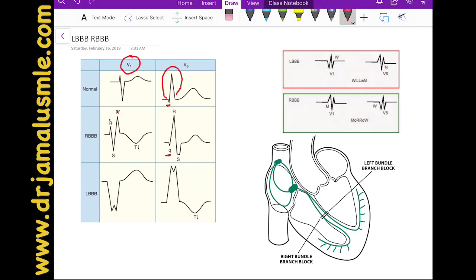Now, if you want to look at the left bundle branch block, the block is on the left side. So instead of it going through the left bundle first, it's going to depolarize the right bundle first, and all electricity is going to go towards left side.